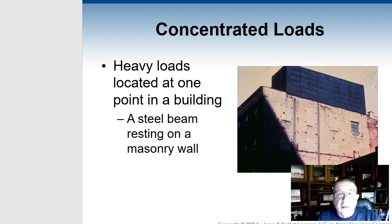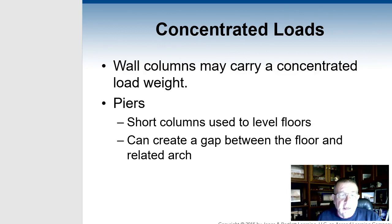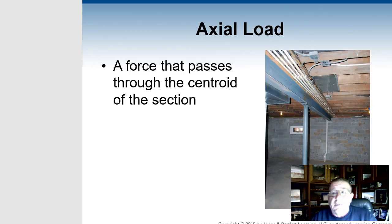Concentrated loads are loads built on one side of a building versus the other. Are they calculated correctly to be there? A lot of things are added after the fact. A good example of a concentrated load is an air conditioning unit put on a roof — concentrated in one spot. Is it calculated to be in that spot, or just put up there? You also have axial loads: force that passes through the centroid of a section of a building, like a basement I-beam with a support column right in the middle.